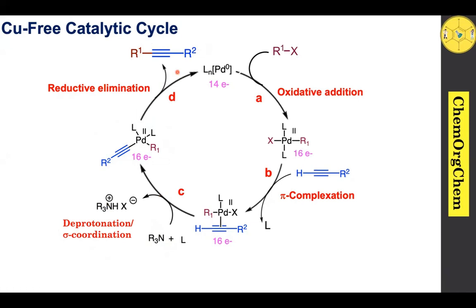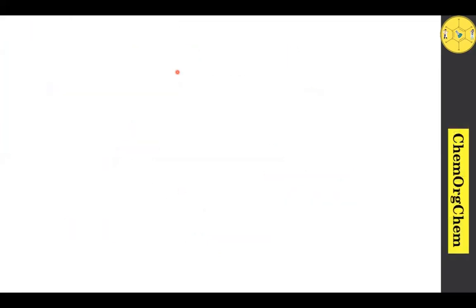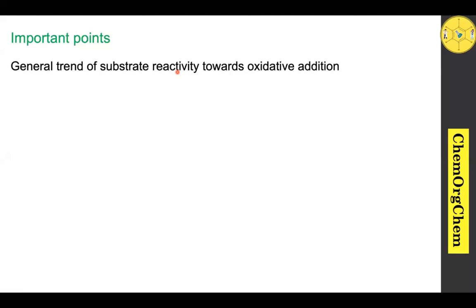In this way, the Sonogashira cross-coupling reaction can be carried out under either copper or copper-free conditions. Since we have already discussed oxidative addition, transmetalation, trans-isomerization, and reductive elimination in previous cross-coupling reaction videos, here we will focus only on some important points. Let's look at the general trend of substrate reactivity towards oxidative addition.